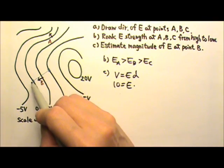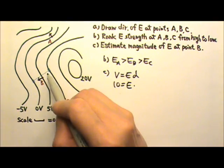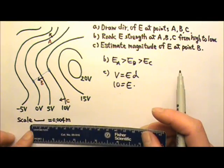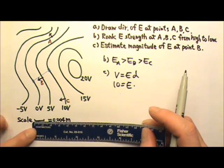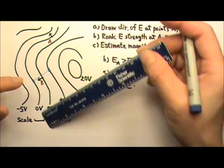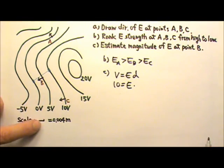And I have to use the distance that's perpendicular to the equipotential surfaces. And if I make the measurement of this scale, I can see that this distance is about twice of this much.